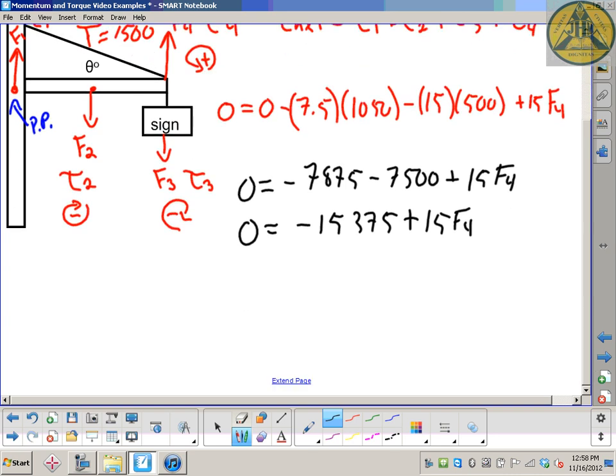So dividing, bringing the 15,375 to the left side and dividing it by 15 gives us 1025 newtons as our upper component of the tension.